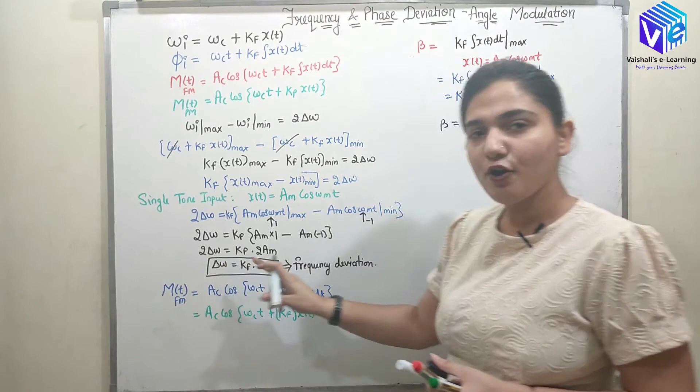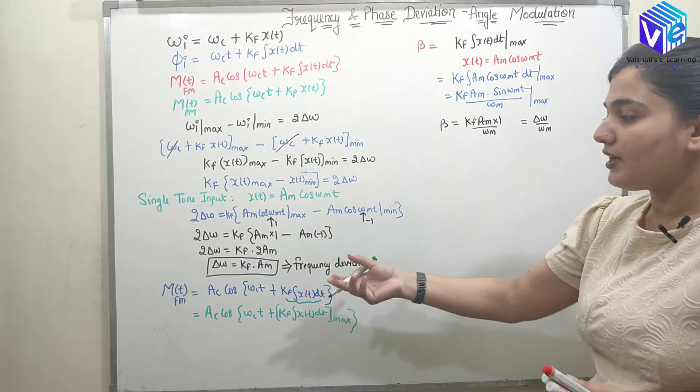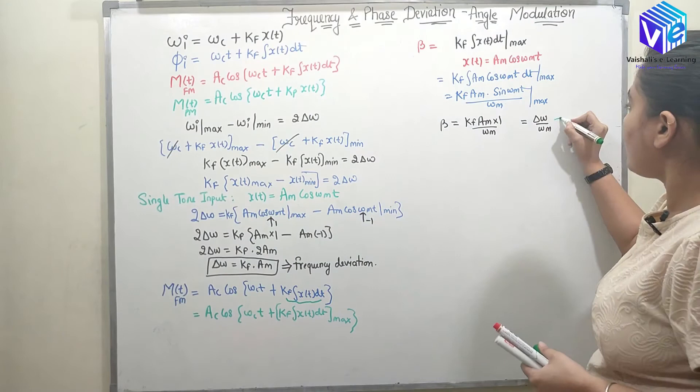Now k_f * A_m was equal to delta_omega, so the phase deviation equals delta_omega / omega_m. This factor, which changes the frequency of the signal in the FM modulated signal, is called the modulation index in the case of FM, denoted beta.